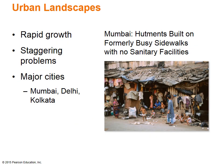There are several cities in India with over 1 million residents, even though most of the region is rural. The rapid growth of these cities is causing widespread urban problems such as homelessness, poverty, congestion, water shortages, air pollution, and sewage disposal. Major cities in India include Mumbai, the capital Delhi, and Kolkata. Hundreds of thousands of people in Mumbai, the largest city in India, live in crude hutments with no sanitary facilities, built on formerly busy sidewalks.